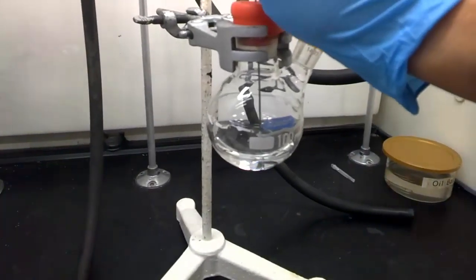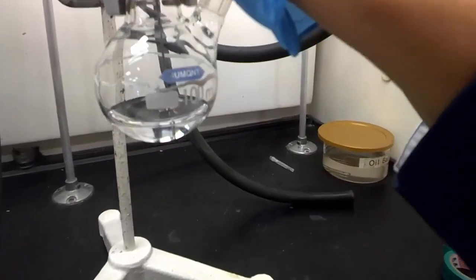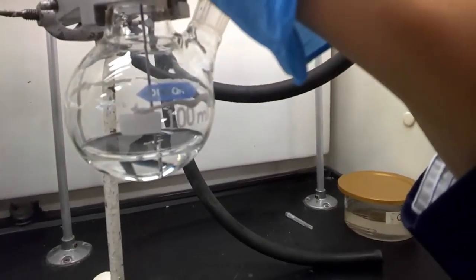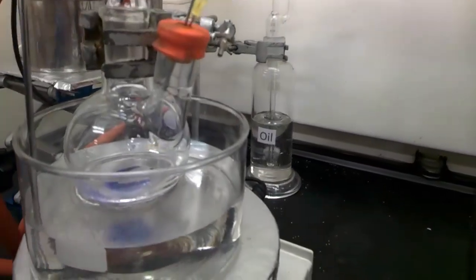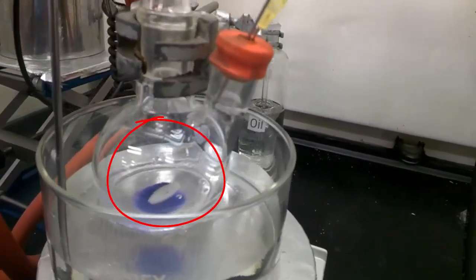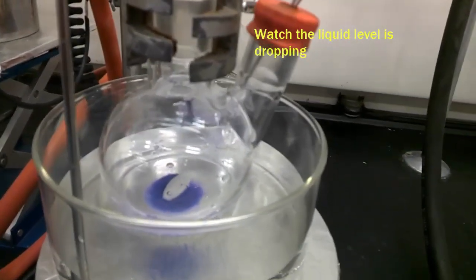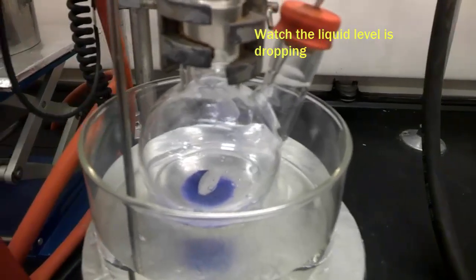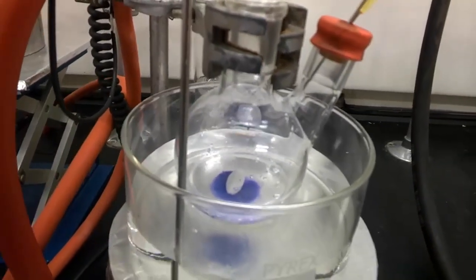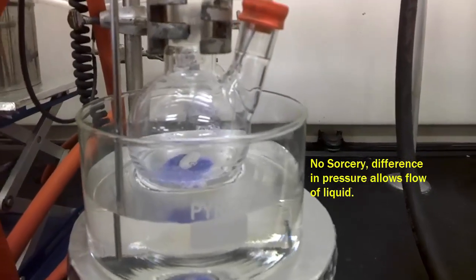Right now we are having the transfer of the anhydrous solvent from the right hand side round bottom flask to the left hand side flask. You see that now the level of the solvent is getting lower and lower. You see these bubbles. Solvent going in. But this is no magic. It's just science. Difference in pressure creates flow from a high pressure to a low pressure.